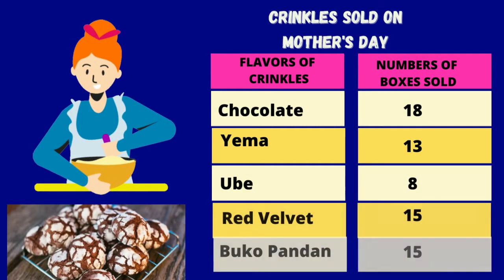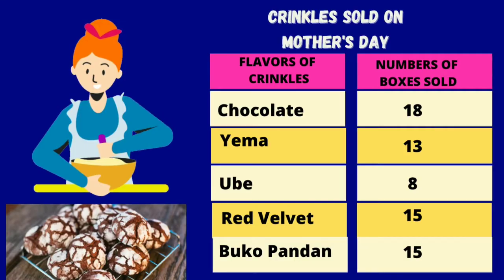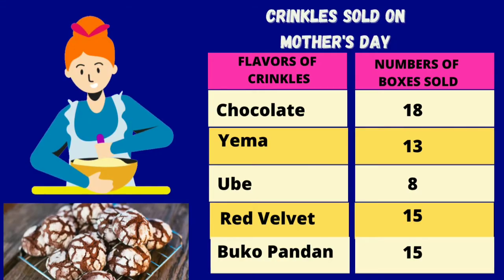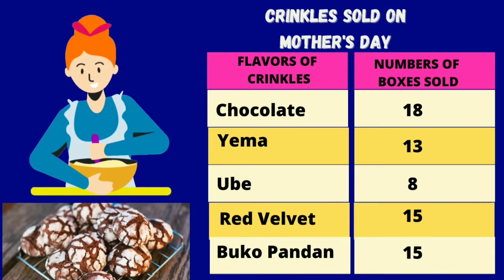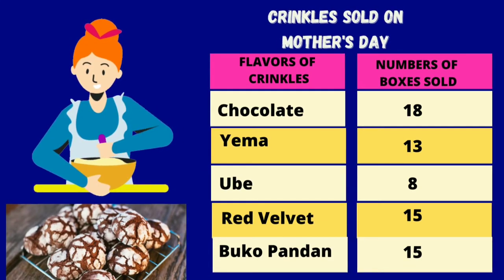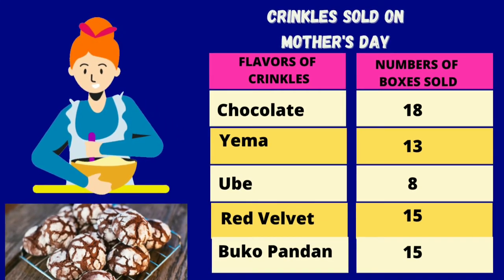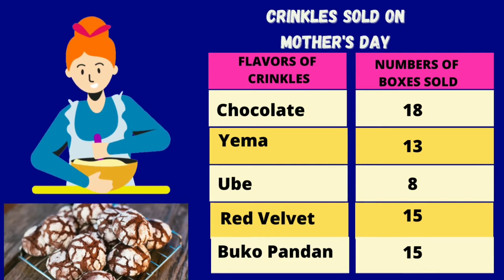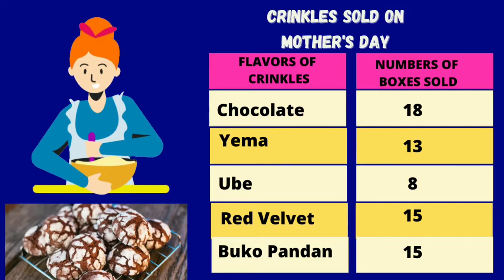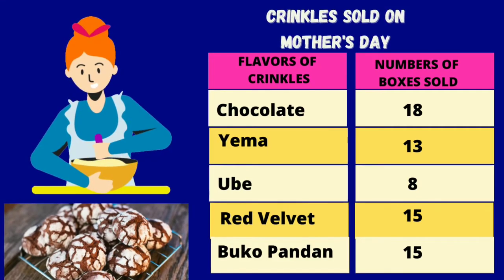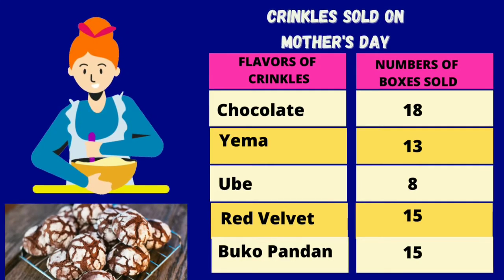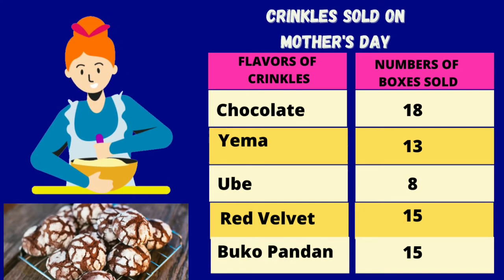The title of the table is Crinkles Sold on Mother's Day. On the first column, it presents the flavors of crinkles. On the second column, it presents the number of boxes sold. In Chocolate Flavor, there are 18 boxes sold. In Yema, there are 13 boxes sold. In Ube, 8 boxes sold. In Red Velvet, there are 15 boxes sold. And in Buko Pandan, there are also 15 boxes sold.